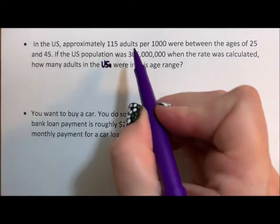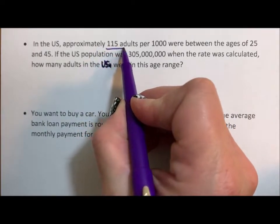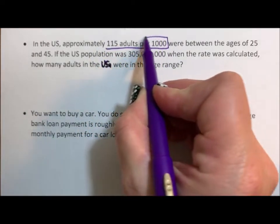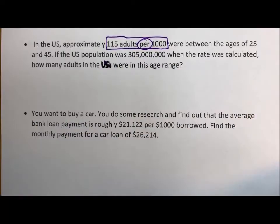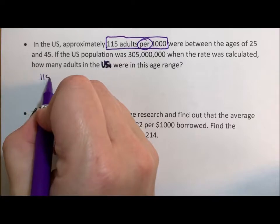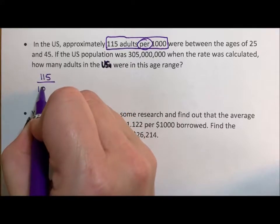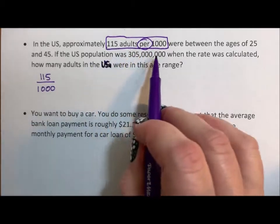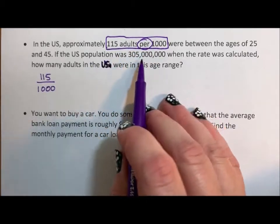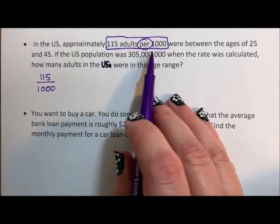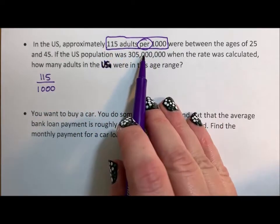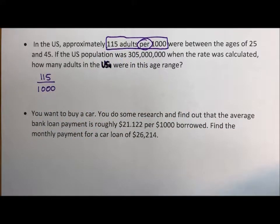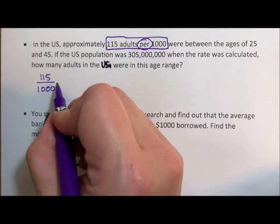Okay, so 115 adults per a thousand. The word per means it's a rate and it means that that's our fraction. 115 per a thousand. That's what it means. And then when we're taking it out of a bigger population, you multiply it to that bigger population. Part of whole multiply to get what part of whole of that bigger population.